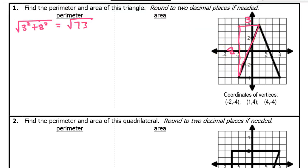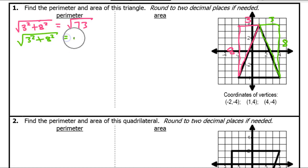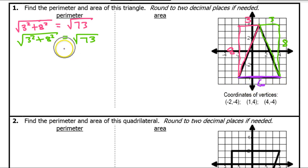Now let's switch colors and find the length of this side in green. This appears to be an isosceles triangle, because this side is also over 3 and down 8. So I'm going to get the same thing — 3 squared plus 8 squared — another radical 73. And the length across the bottom: I have 4 to the right and 2 to the left, so that's a total of 6.